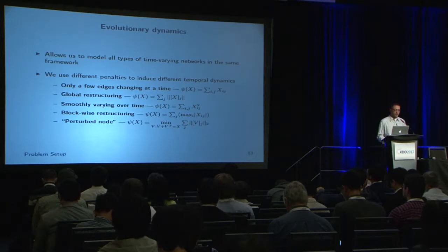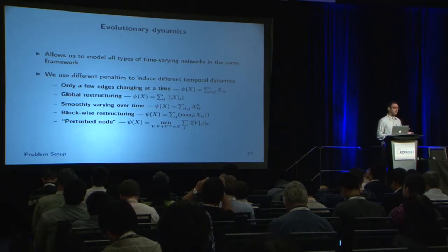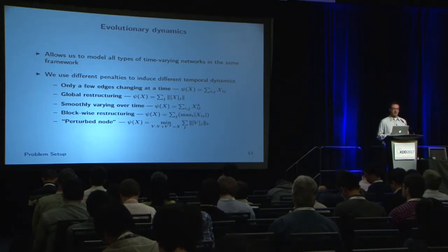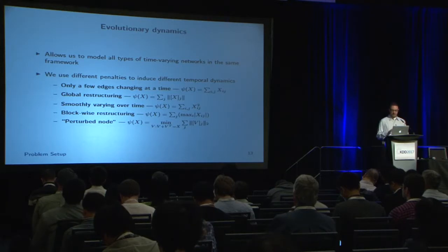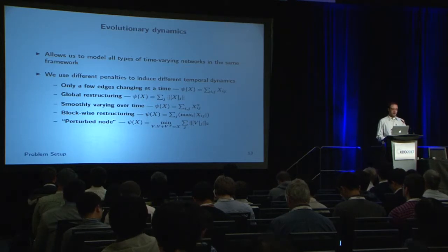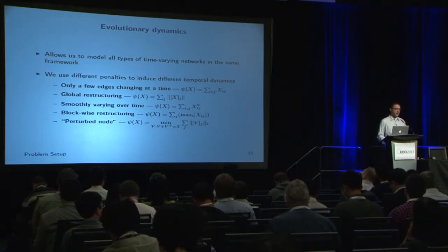The penalty function allows us to model all different types of time-varying networks in the same framework. In this paper we analyze five: a couple of edges changing, occasional but rare global restructurings, smoothly varying over time, block-wise restructuring, and the perturbed node — a local shift where something happens to a single node but nothing else changes. Each is modeled with a different penalty function that uncovers these specific types of evolutions within the same model.